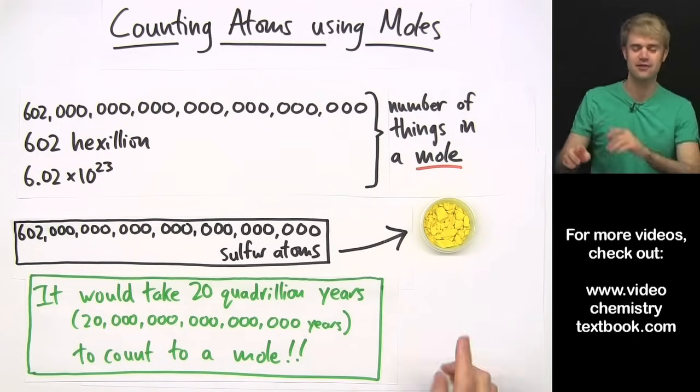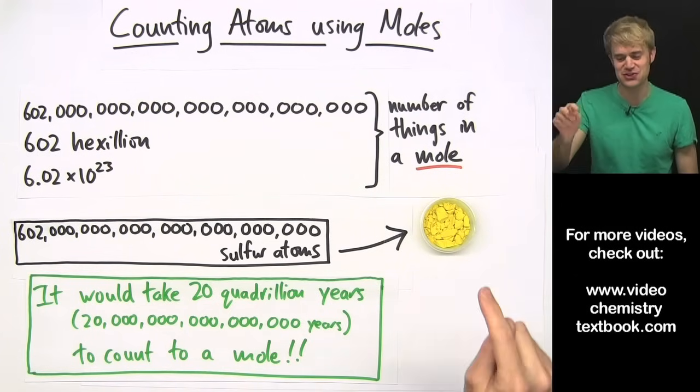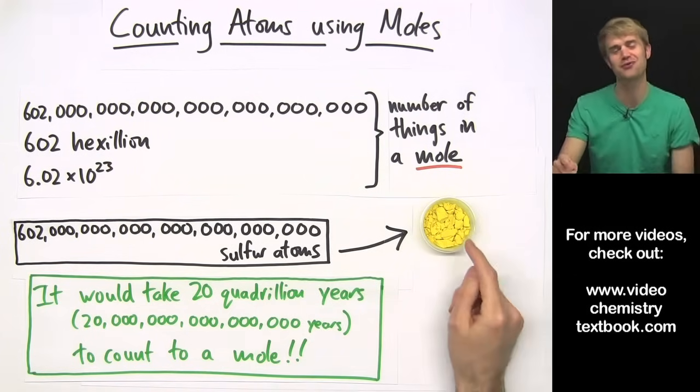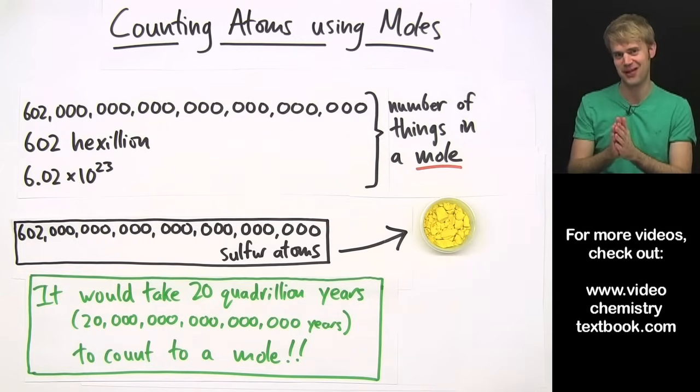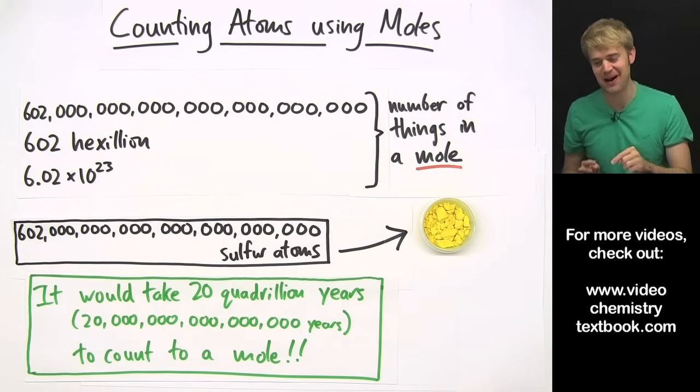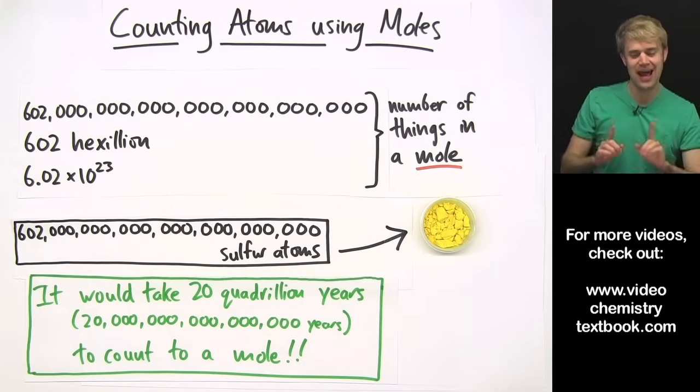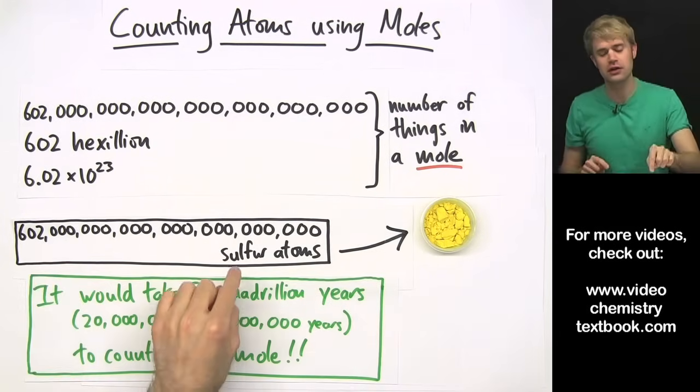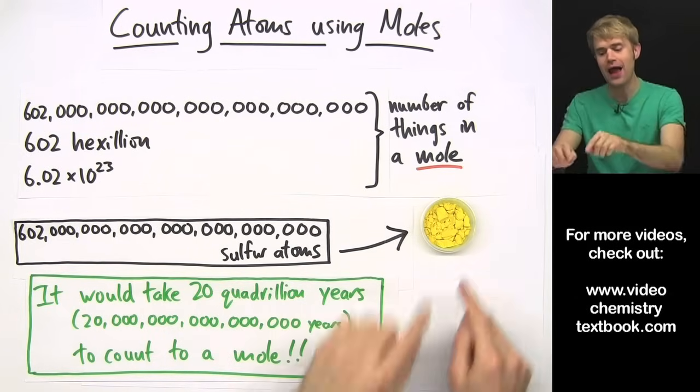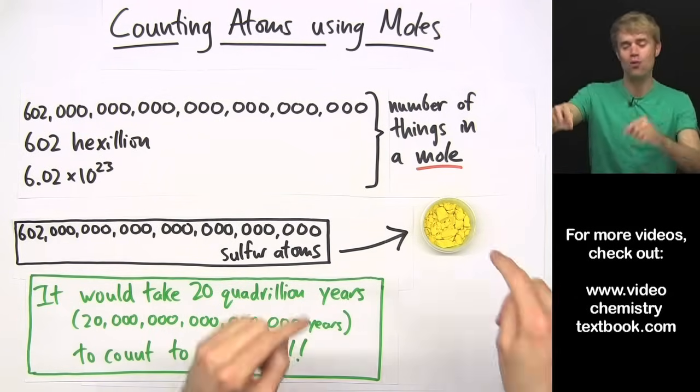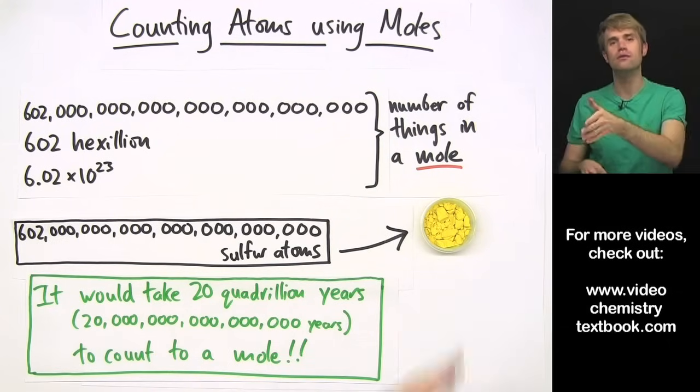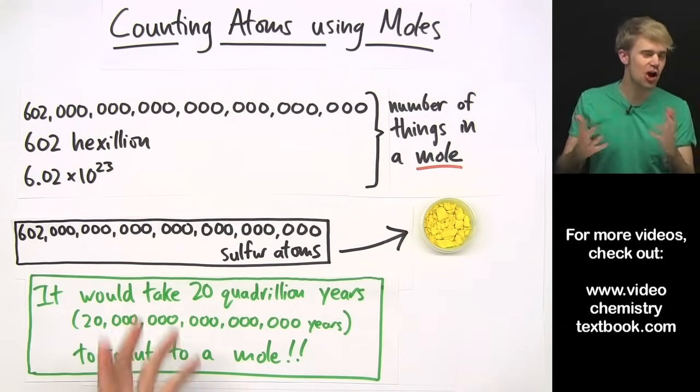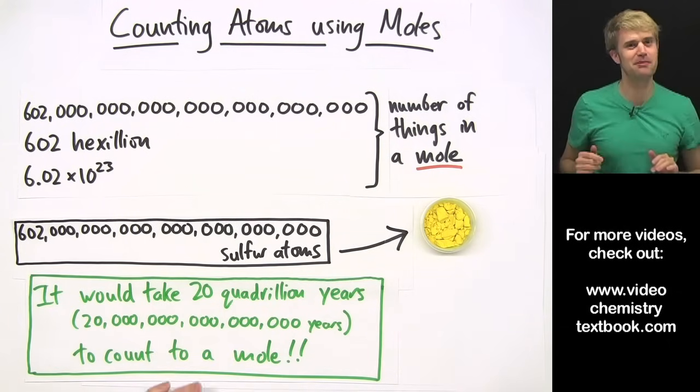Yet I'm pretty confident that there are pretty close to 602 hexillion sulfur atoms in here. How do I know that? Well, we're going to learn more about this. But it turns out that I can figure out how much a mole, 602 hexillion sulfur atoms weigh, and then I can put this thing on a scale and weigh out that number of sulfur atoms.